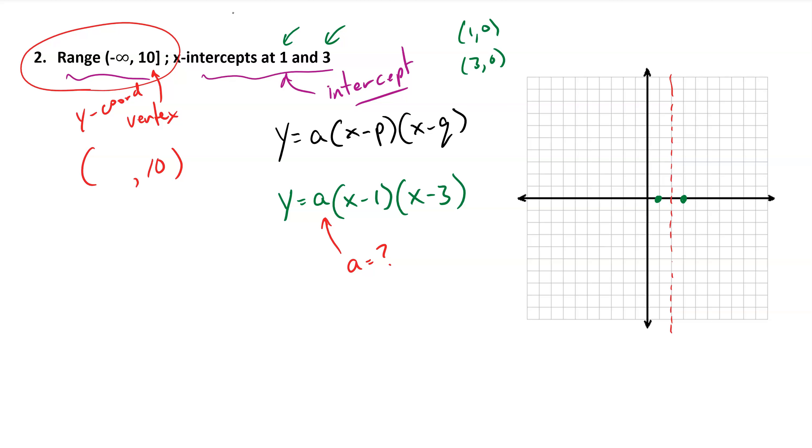It's the average of the two x-intercepts. So the axis of symmetry we can get from those x-intercepts: 1 plus 3 divided by 2 is 2. So that gives you my x-coordinate of the vertex. So the vertex is up here at (2, 10).